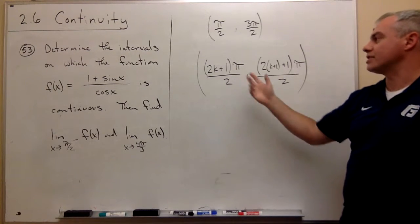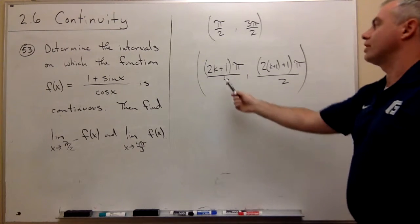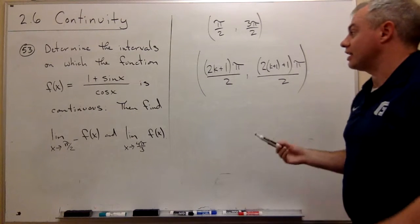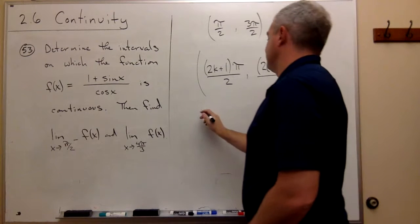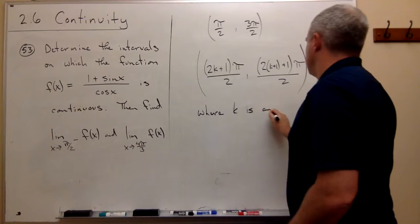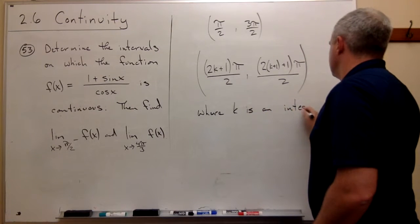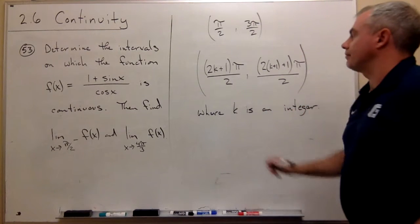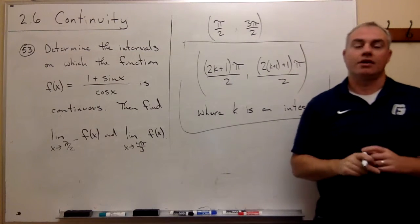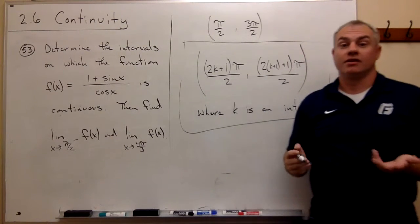And so it's discontinuous at all of these points like 2k plus 1 pi over 2 for any k that is an integer, where k is an integer. OK. So here's a nice way of writing all of the intervals on which this thing is continuous.